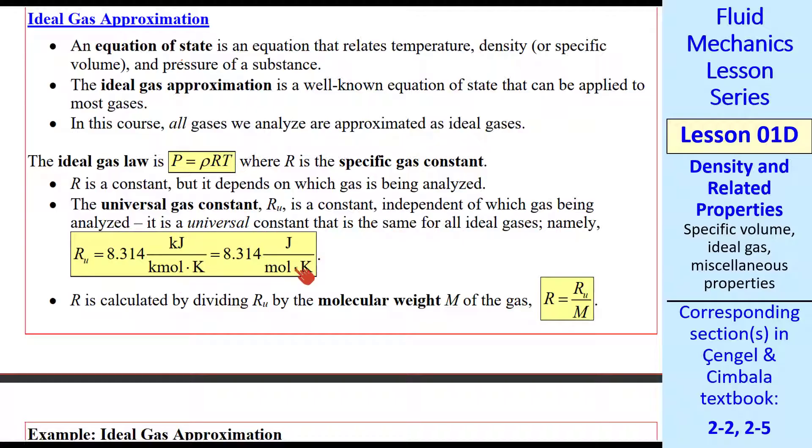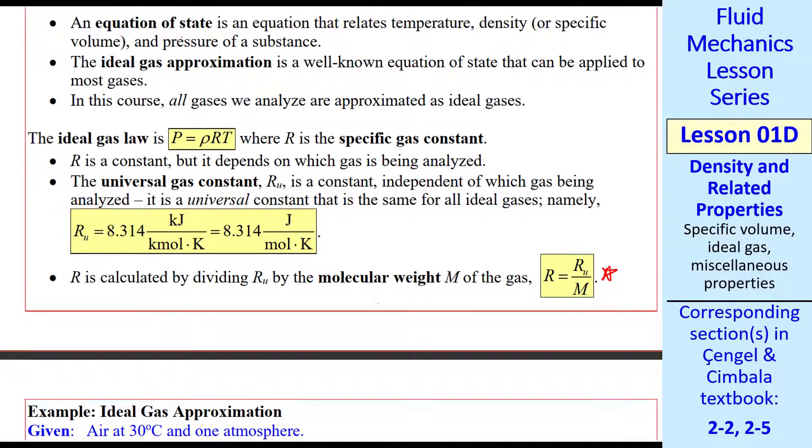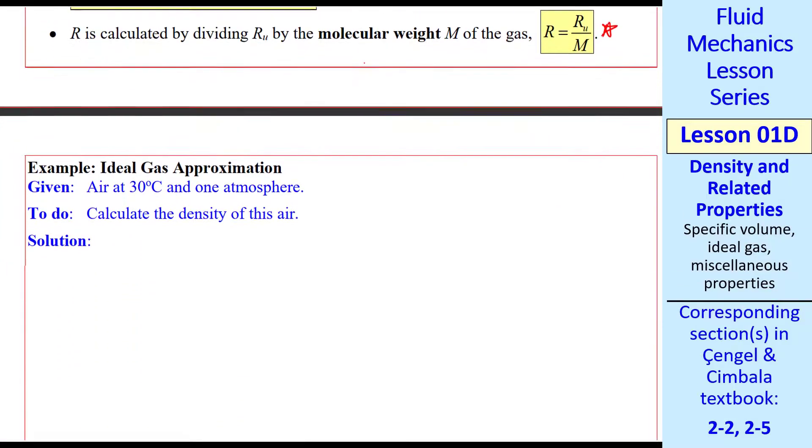Here is its value in two different sets of units. The specific gas constant is calculated by dividing the universal gas constant by the molecular weight M of the gas, R equals Ru over M. So as long as we know the molecular weight of the gas, we can find the specific gas constant.